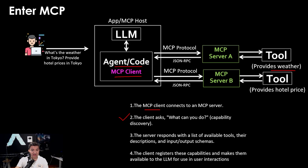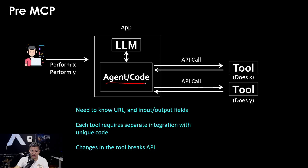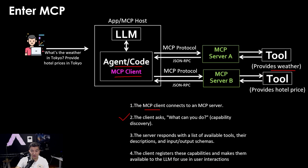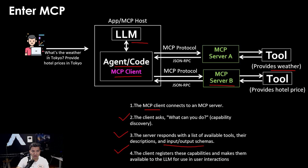You don't need to hard-code tool descriptions anymore. In the previous example you had to put in the code what tool one does, what tool two does. But in this new MCP model it's auto-discoverable — the client asks what can you do, and the MCP server responds with a list of available tools, their descriptions, and input/output schemas. The client registers these capabilities and makes them available to the large language model, so when you ask what's the weather in Tokyo, the LLM can appropriately invoke the specific tool.